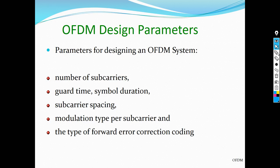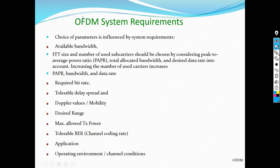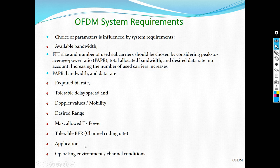The main parameters in OFDM that we need to be careful about while designing are: the number of sub-carriers, the guard time and symbol duration, the sub-carrier spacing, the modulation type per sub-carrier, the type of forward error correction and ARQ, and whether we will use adaptive modulation. All these influence the system characteristics: available bandwidth, FFT size, peak-to-average power ratio, required bit rate, delay spread, Doppler values, mobility, range, transmit power, tolerable bit error rate, and operating environment.